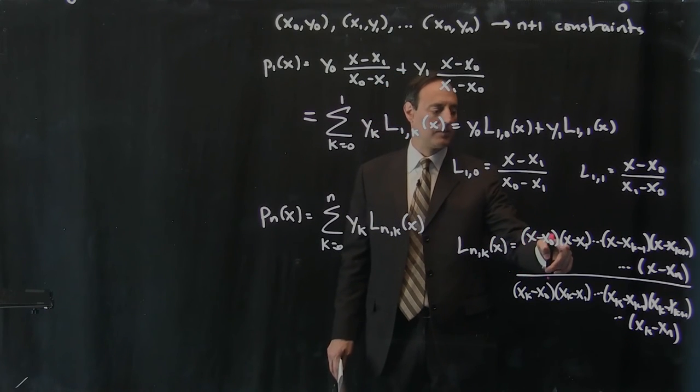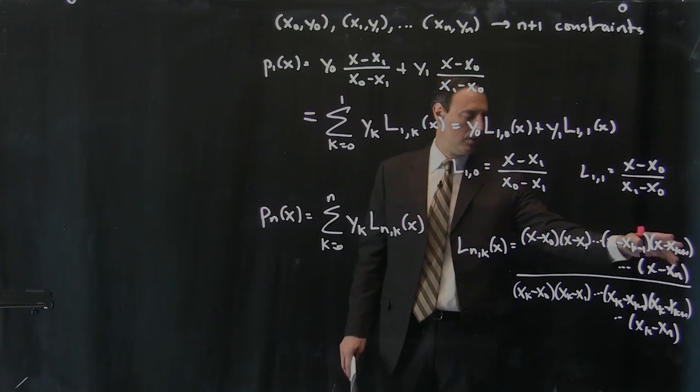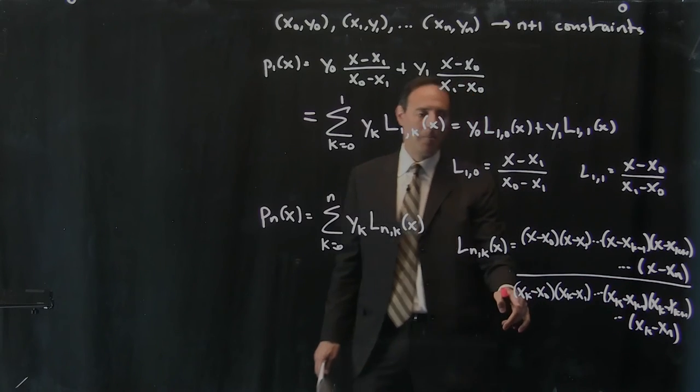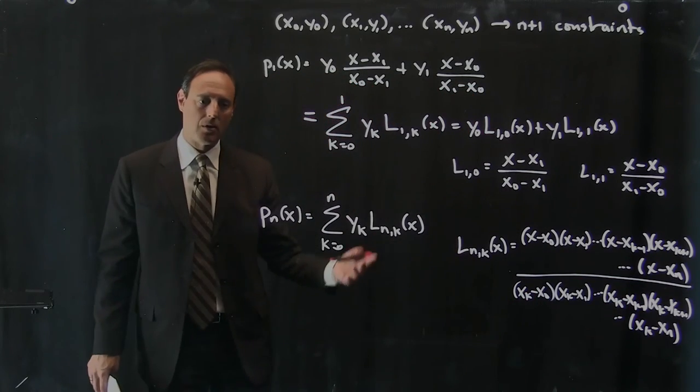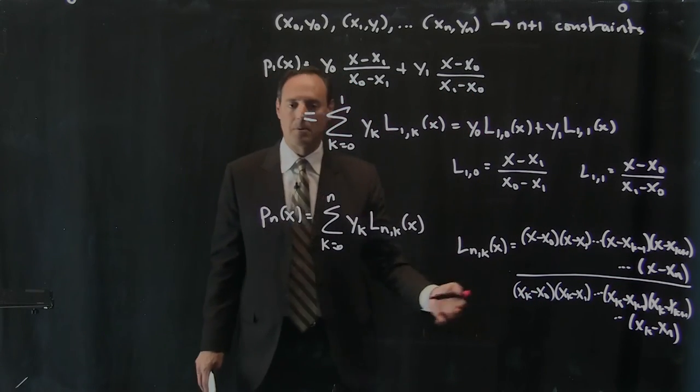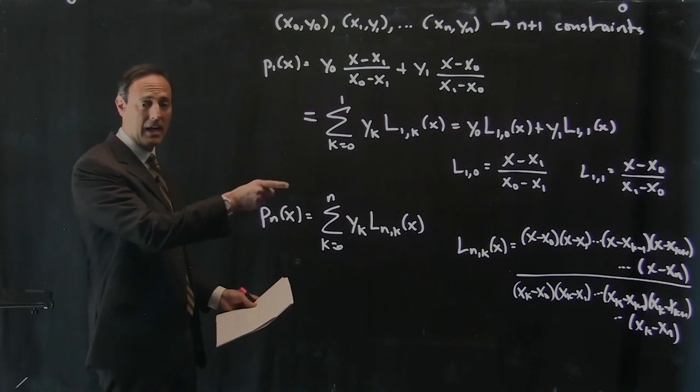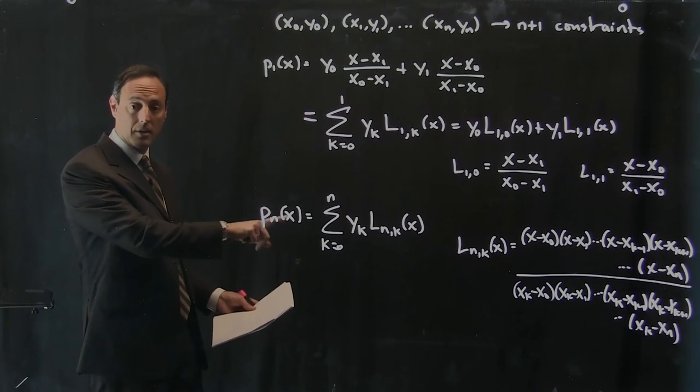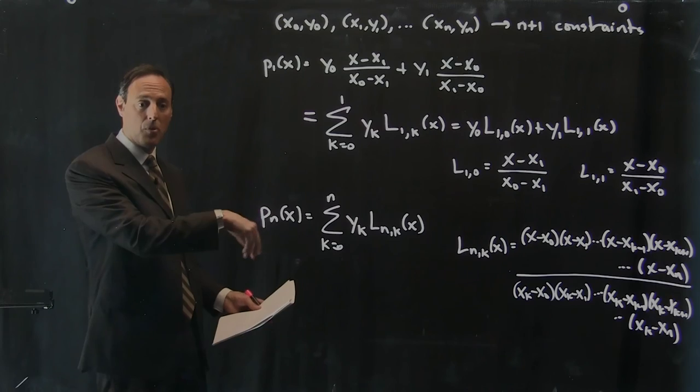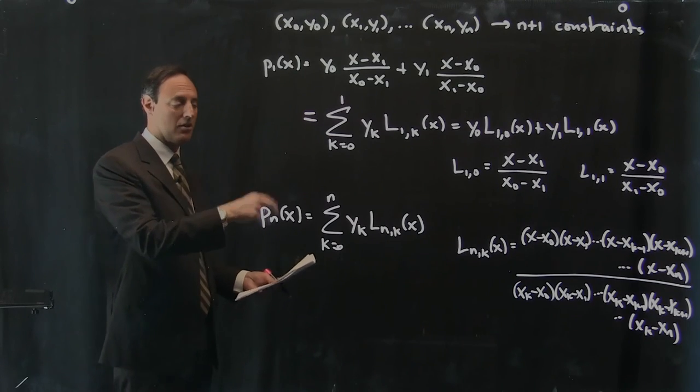And on the bottom, you have x of k minus x0, x of k minus x1. In fact, the top and the bottom are identically the same. So when I put an x of k there, that thing is 1.